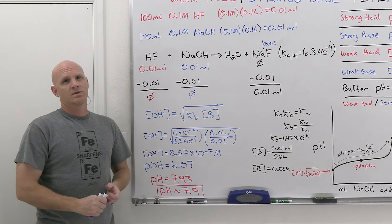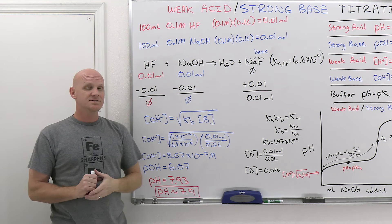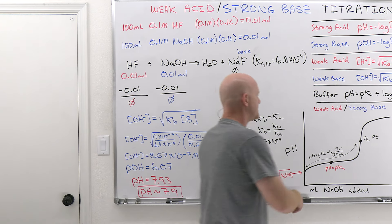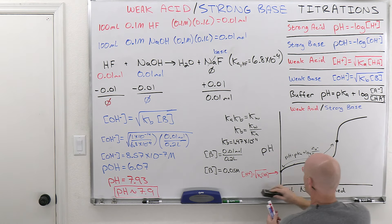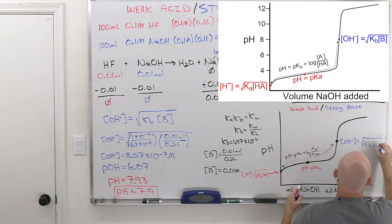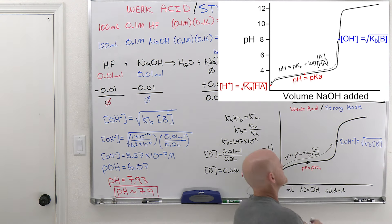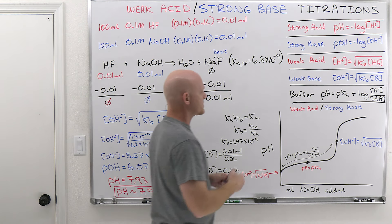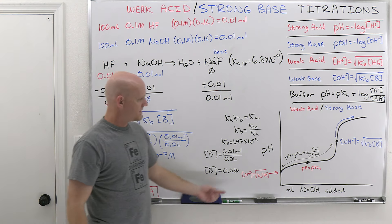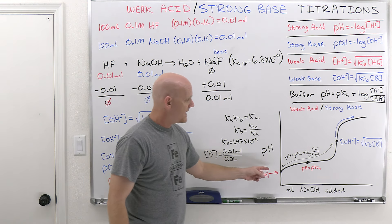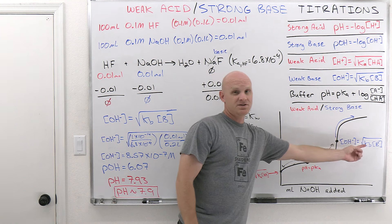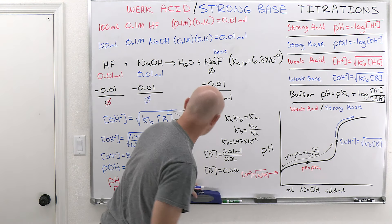So the four regions: initial point — just weak acid, use the shortcut; anywhere after the initial point up to the equivalence point — both weak acid and conjugate base, use Henderson-Hasselbalch; right at the equivalence point — only the weak conjugate base, use the weak base shortcut. Now what do we do after the equivalence point?